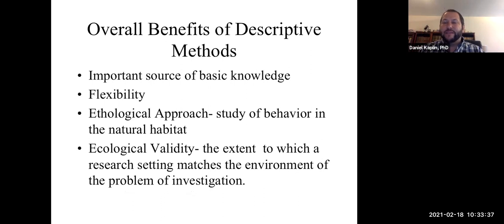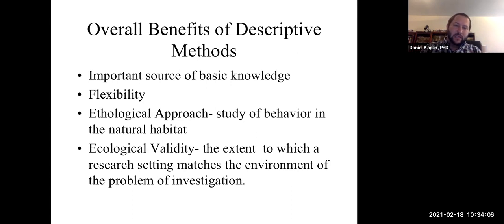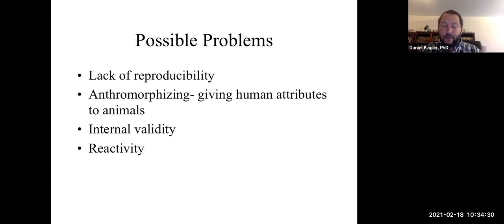From a bird's-eye view, what are some of the benefits of observational or descriptive research methods? Observational research studies allow you to describe behavior. They give you basic, fundamental knowledge — they're flexible and pragmatic. You get ethological and ecological validity, because you're studying in a natural habitat and it generalizes to the larger setting. Some of the problems include lack of reproducibility — the next person who observes might find something different because cultures change. You can also have anthropomorphizing — giving human-like qualities to animals. Because you don't have control over the environment in the field, you have issues of internal validity and reactivity.